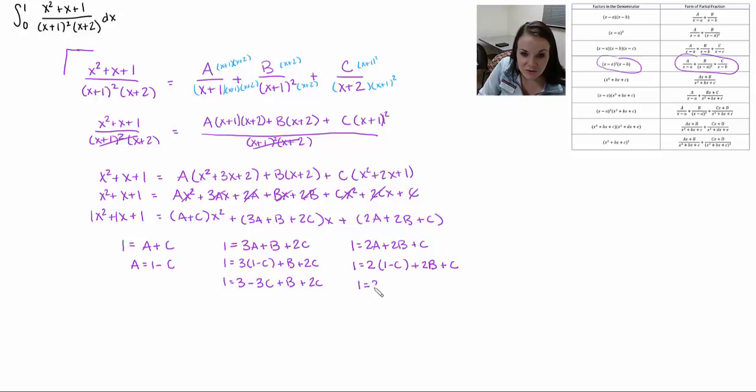And then this side turns into 2 minus 2c. And then I can go ahead and I can combine. So if I move that 3 over I get negative 2 equals b minus c. And over here I get negative 1 equals 2b minus 2c. When I rearrange this, I can plug it in here. And I end up getting c equals 3 when I solve that. So that's my c.